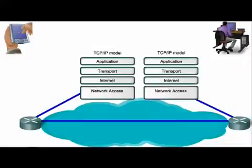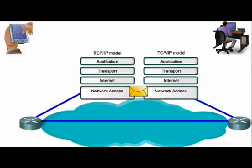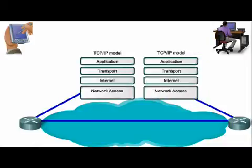Let's look at how the communication process happens as explained in the TCP-IP model. First, the creation of data at the application layer of the source device. Next, segmentation and encapsulation of data as it passes down the protocol stack of the source device. Then, the generation of the data onto the media at the network access layer of the stack, followed by the transportation of the data through the inter-network, which consists of media and intermediary devices such as routers and switches. Finally, the data is received at the network access layer of the destination device, where it is decapsulated, reassembled, and passed up the stack to the application layer.